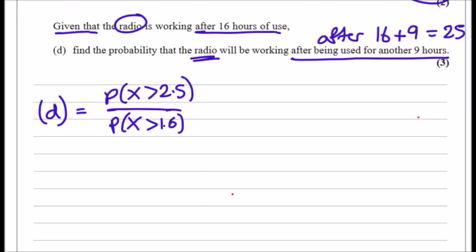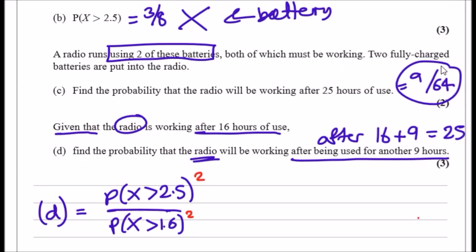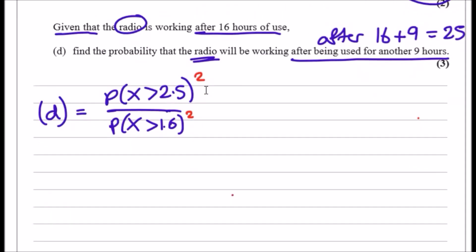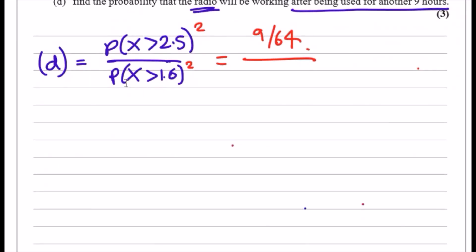Because we're using a radio for both, we have to square both of them—we need two. That's exactly what we did earlier. The solution to part c was 9/64, so this squared is 9/64. Now let's work out P(X > 1.6).